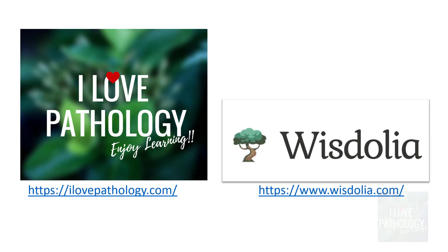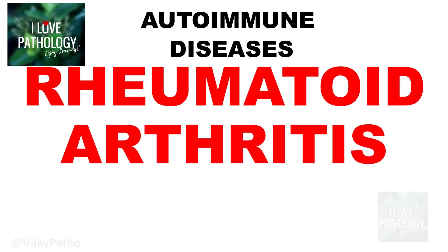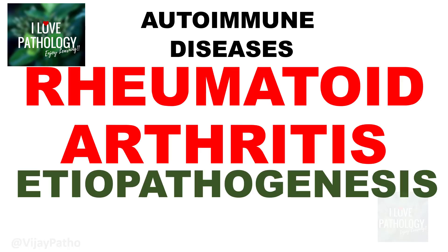Welcome back to this short tutorial from Pathology Made Simple at ilowpathology.com, supported by the AI-based study tool called Wisdolia. At the end of this session I will be posting the link to the practice sessions via Wisdolia. In continuation with the autoimmune diseases series, I have completed general concepts of autoimmunity and systemic lupus erythematosus, and now let's learn about rheumatoid arthritis — specifically its etiopathogenesis.